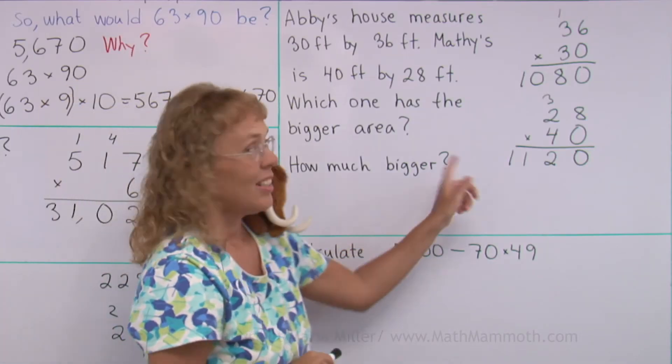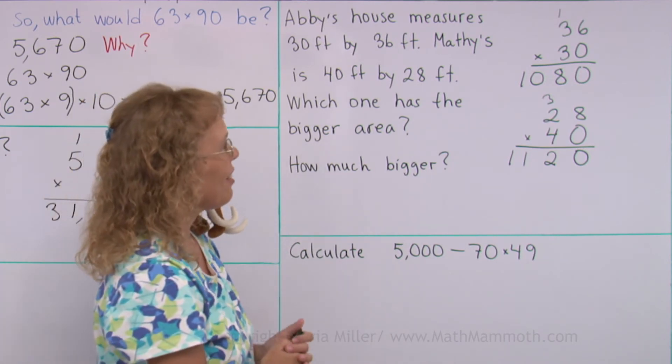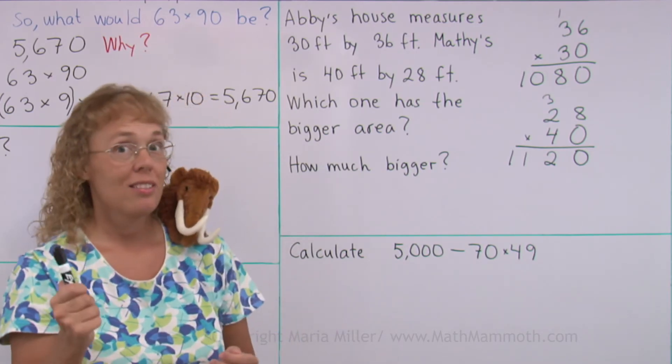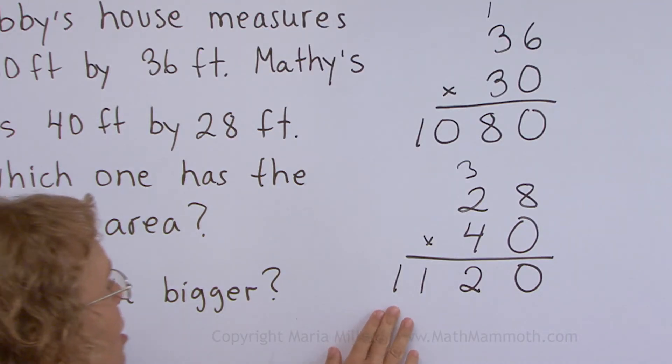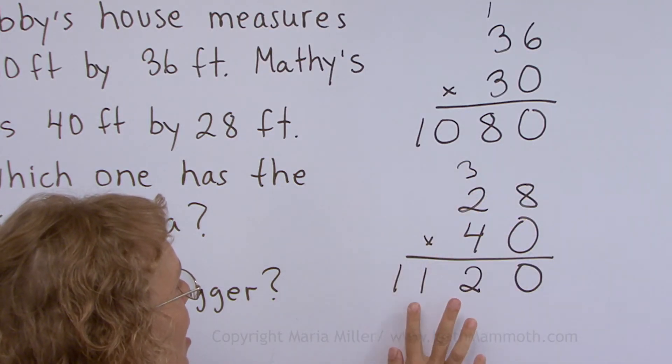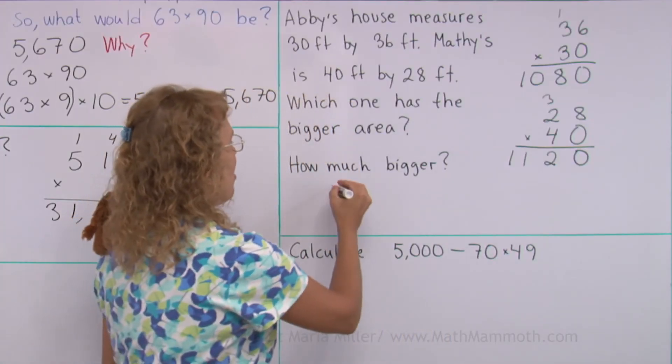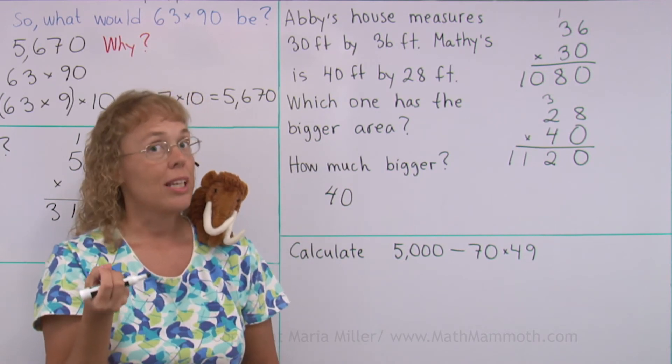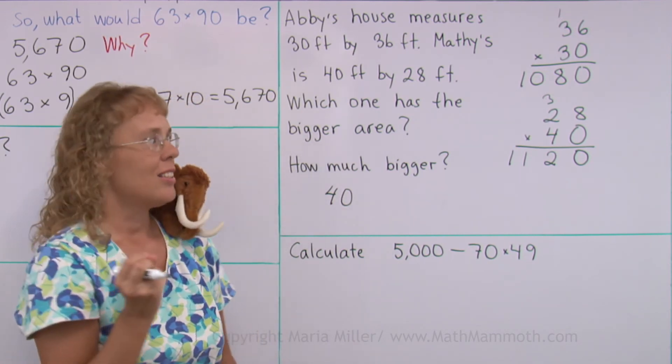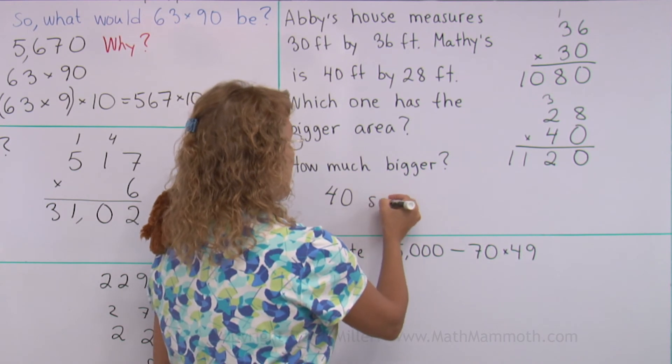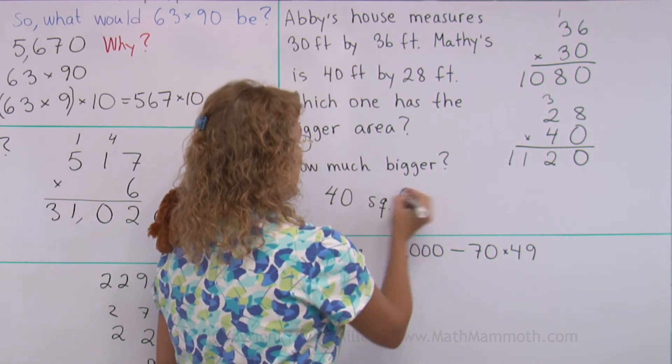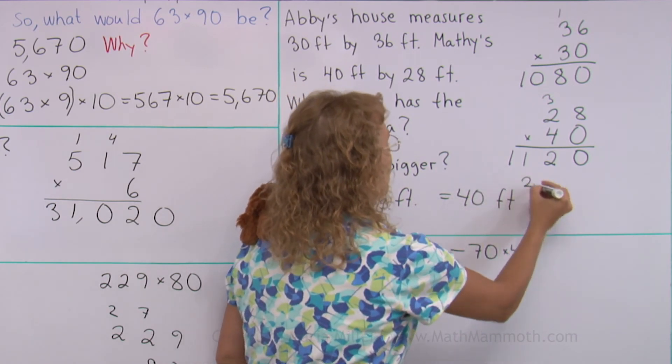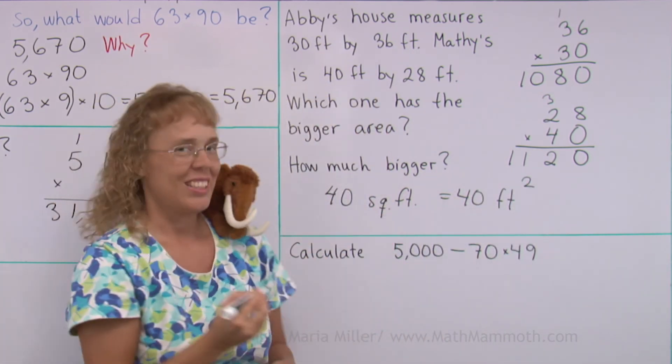So, we can see Matthew's house has the bigger area. And how much bigger? Can you tell? Just look at the numbers. In other thousands, there's 80 and 120. The difference is just 40. 40 what? What's the unit? This is about area. So, it is square feet. 40 square feet. Or you can write it 40 ft and the elevated little 2. Both of these mean square feet.